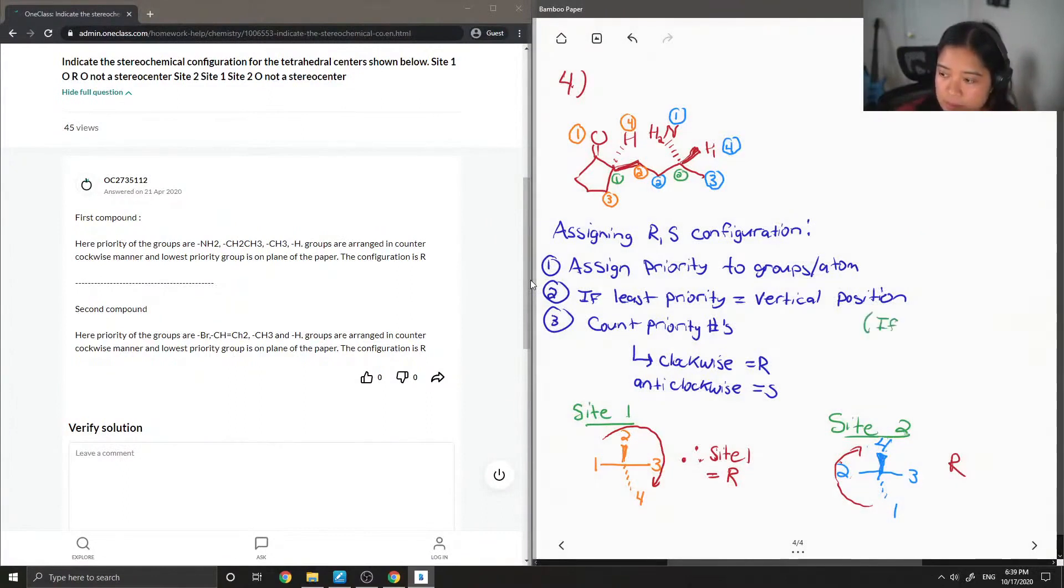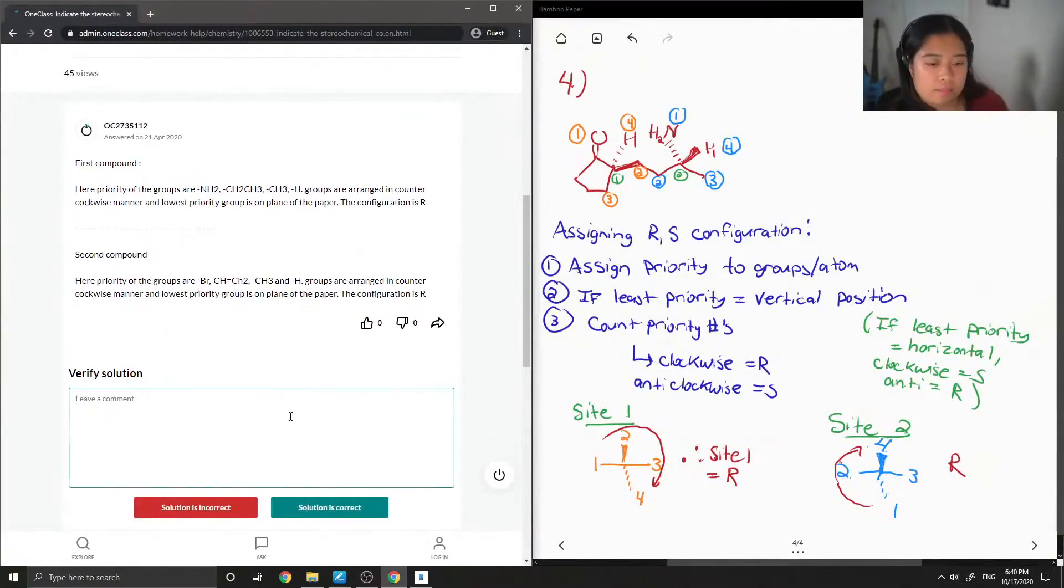For example, if you put your least priority in the horizontal position, then it's like the opposite. So it just depends on what you're comfortable with. Like either way is correct as long as you are consistent. So this solution is still correct.